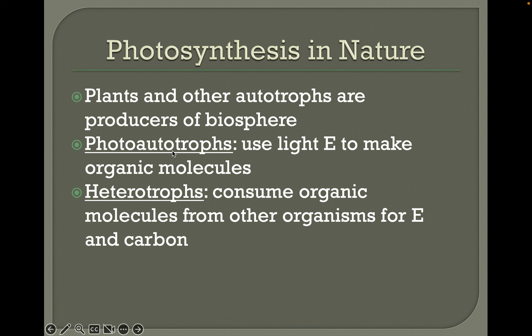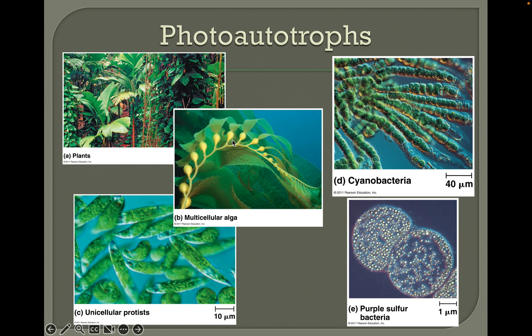Auto means self, so autotrophs are self-feeders. Some examples of photo-autotrophs: in addition to plants, there's also algae, cyanobacteria, unicellular protists, and even some special purple sulfur bacteria that can do photosynthesis.